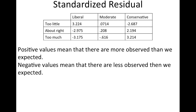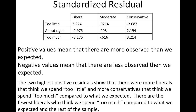That's one thing that should be part of your conclusion. You don't need to talk about every single cell — you want to talk about the higher values because they're the ones making the big difference. Talk about the highest positive and the highest negative values. In this case, 3.224 and 3.214 are fairly close, so I actually talked about both. The two highest positive residuals show that there were more liberals who think we spend too little and more conservatives who think we spend too much compared to what we expected.